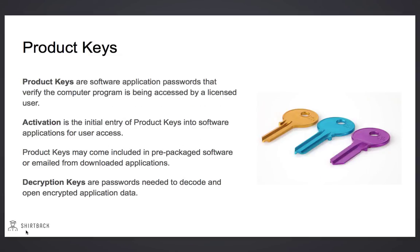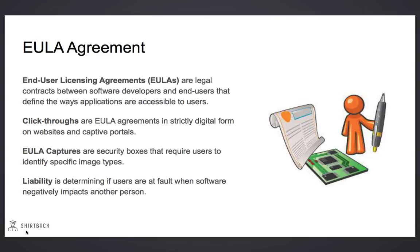Product keys are software application passwords that verify that licensed users are in the process of accessing the program. Activation is the initial entry of product keys into the software. The product keys may come included in pre-packaged software or emailed from a downloaded application. Decryption keys are the passwords needed to decode and open encrypted application data. End-user licensing agreements are legal contracts between the software developer and the end-user, defining the way the applications are accessible to the user.